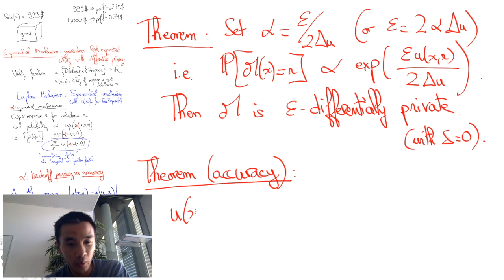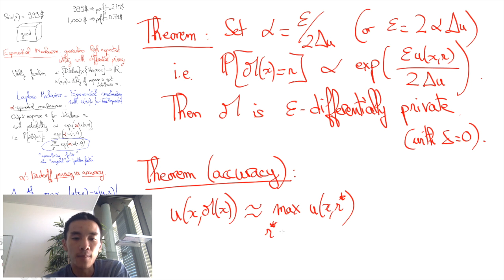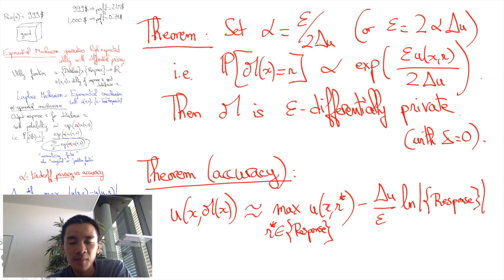Its utility will then typically be of the order u(x, M(x)) about the optimal utility, that is the maximum of all possible responses r* of u(x,r*), minus a small loss which is going to be of the order delta u divided by epsilon times the logarithm of the number of possible responses.